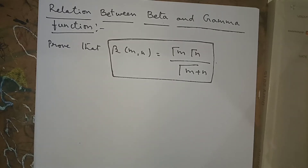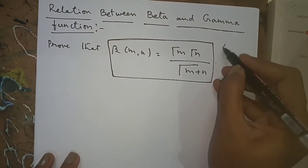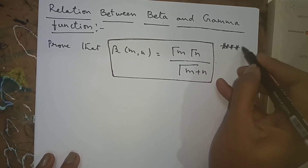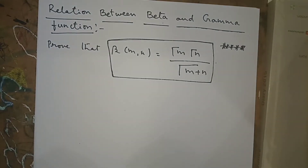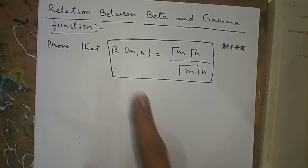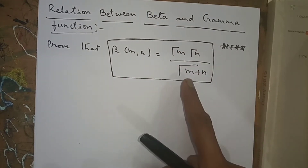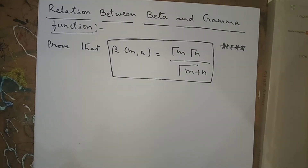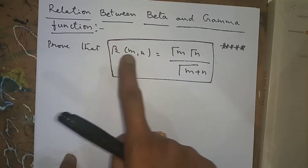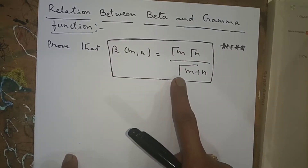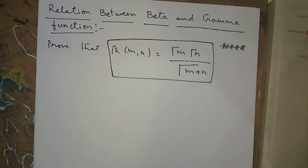Hello everyone. Today I am going to explain the relation between the Beta and Gamma functions. This is a very important question — remember it well. The relation between the Beta and Gamma function is: Beta(m, n) = Γ(m)·Γ(n) / Γ(m+n). This formula is used in a number of problems.